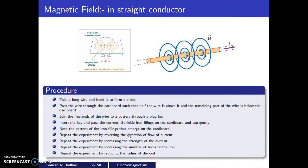Repeat the experiment by reversing the direction of current flow. Repeat again by increasing the strength of current, then by increasing the number of turns of the coil, and finally by reducing the radius of the coil.